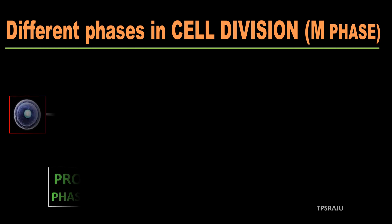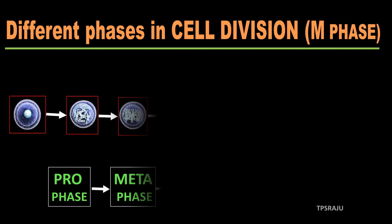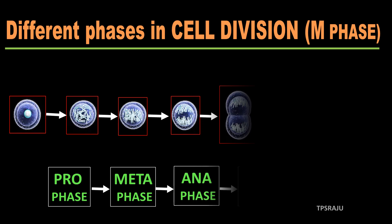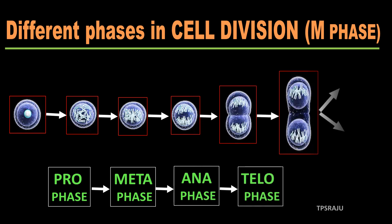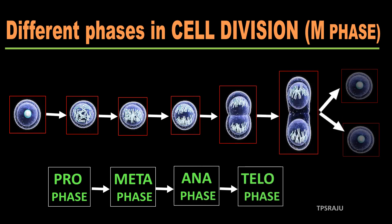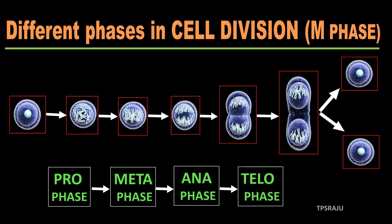The order of different phases in cell division is: Prophase, Metaphase, Anaphase and Telophase.